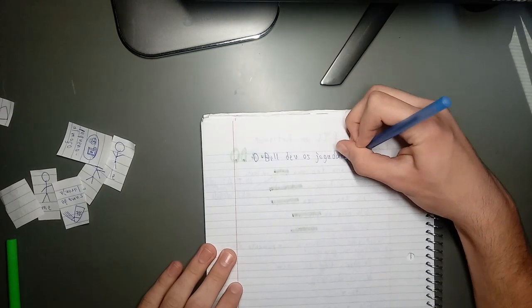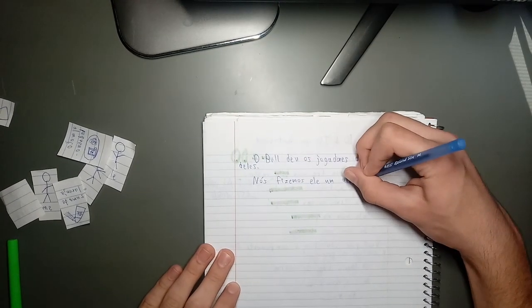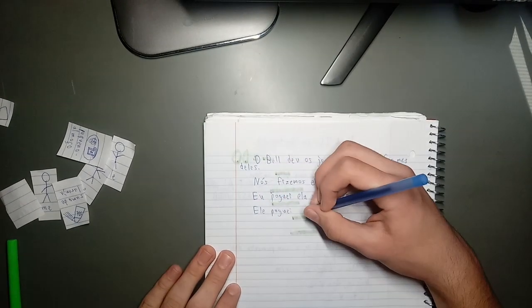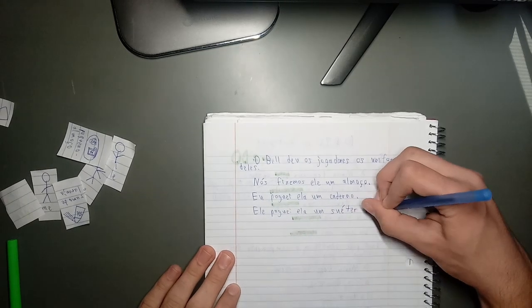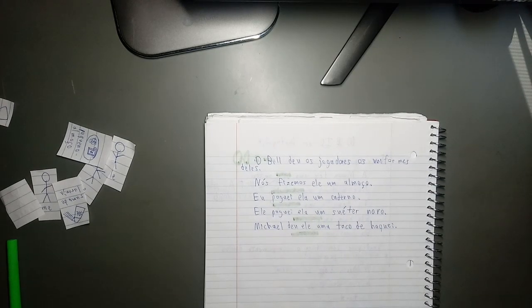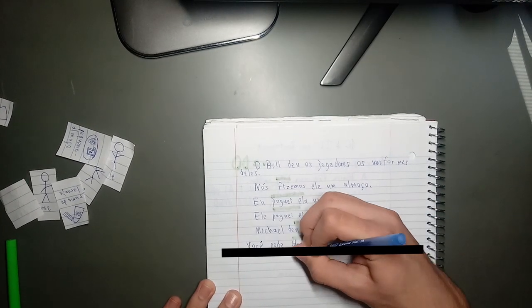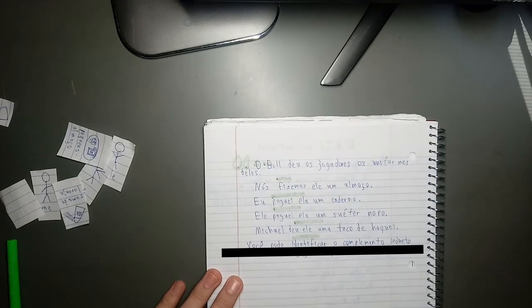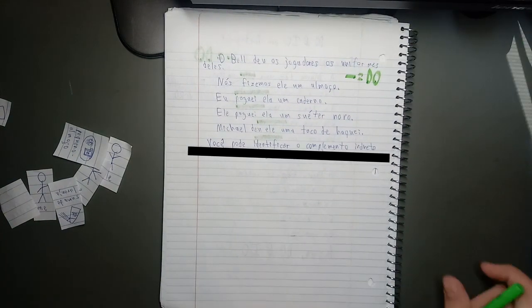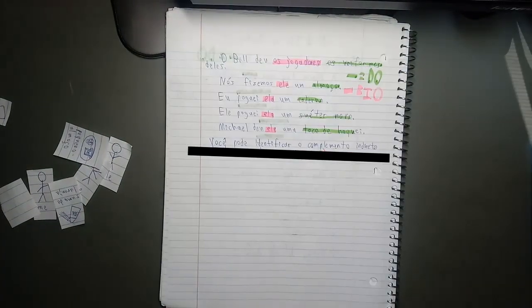Here are some examples of Portuguese sentences with direct and indirect objects. O Bill deu aos jogadores os uniformes deles. Nós fizemos ela um almoço. Eu paguei a ela um caderno. Ele comprou para ela um suéter novo. Michael deu a ela um taco de hóquei. Here are the answers to those. Pretty easy, right? Hopefully you got all of those right, hopefully. Let's move on.